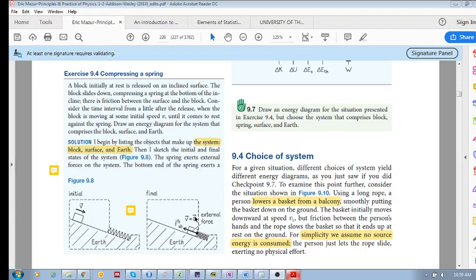V equals zero, and there is friction between the surface and the block. Now let us construct an energy diagram, but they specifically say we want a system that includes the block, the surface and the earth. So it doesn't include the spring.